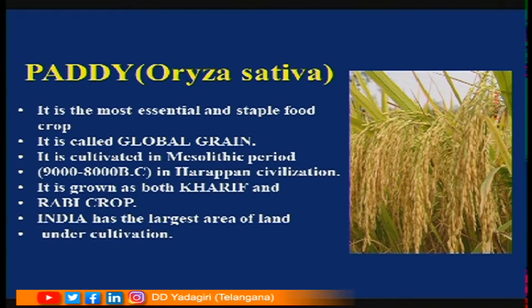Paddy is the most essential and staple food crop. Most South Indians eat paddy as their staple food, whereas North Indians take wheat. Paddy is a crop grown in both Kharif and Rabi seasons, while wheat is grown only in Rabi season.